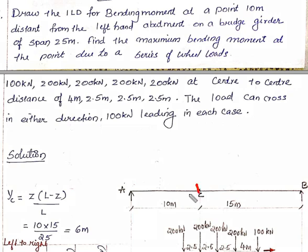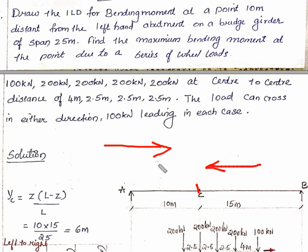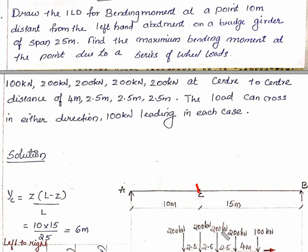We need to find the maximum bending moment at a point C, located 10 meters from the left abutment. To calculate the maximum bending moment, we consider two load cases: first, the load moves from left to right with 100 kN leading; second, the load moves from right to left. In each case we calculate the bending moment value using the series of loads.